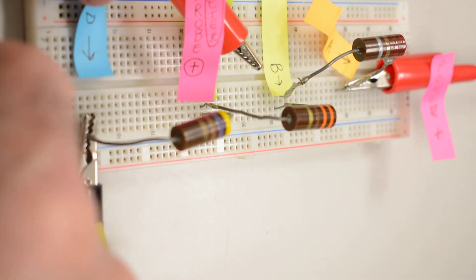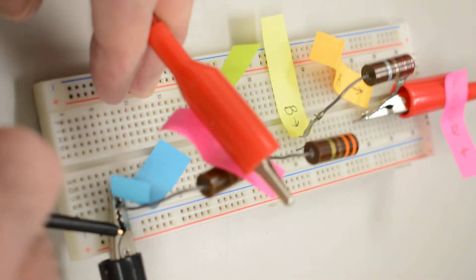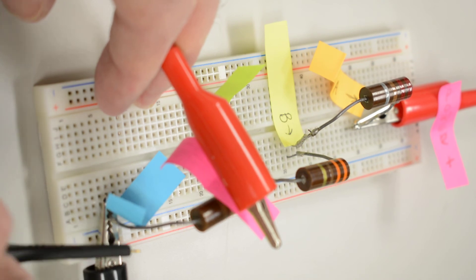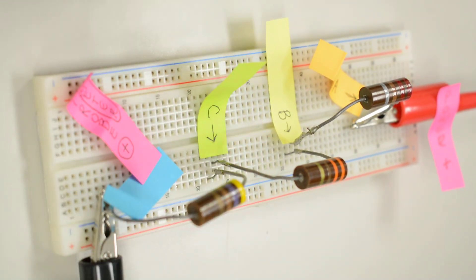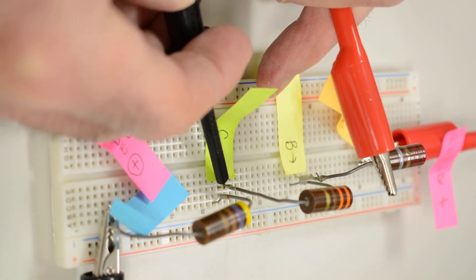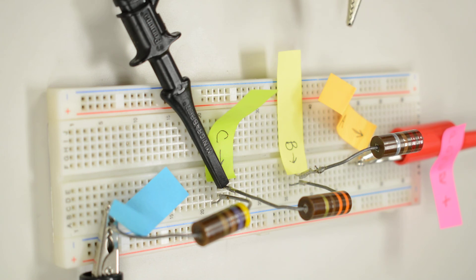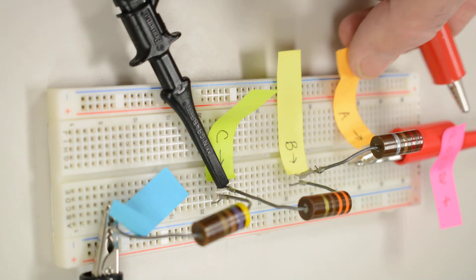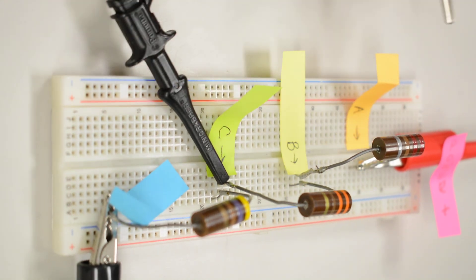And when I move ground, I will take my ground probe, and I'm going to move my ground probe to C. And then I will measure again at the same points labeled A, B, C, and D.